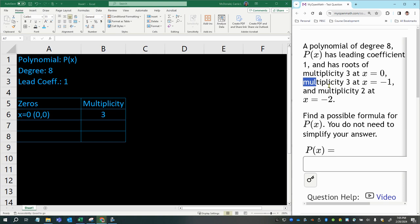Moving on, we have a multiplicity of three at x equals negative one. So at x equals negative one, what that would create is the ordered pair (-1, 0), because again, the y value would be zero there. And this time, we have a multiplicity of three again.